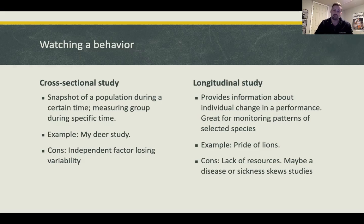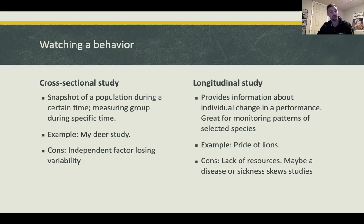Opposite to cross-sectional is longitudinal, which provides information about individual change over a great length of time. A good example is wildlife documentary series like those on the Discovery Channel that follow a lion pride from cubs all the way to adulthood. However, you have to account for everything that lion went through as a cub — we don't know if the cubs were weaker, if the mother had disease, or if her milk provided great nutrition. All these factors have to be accounted for and can skew data over long periods.